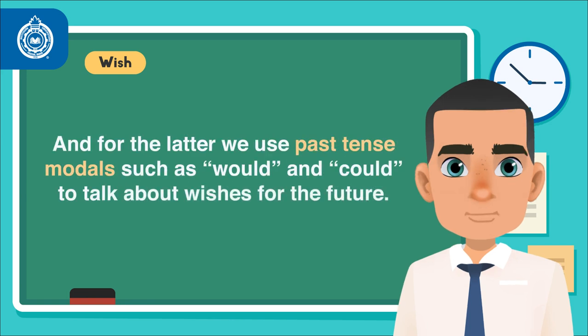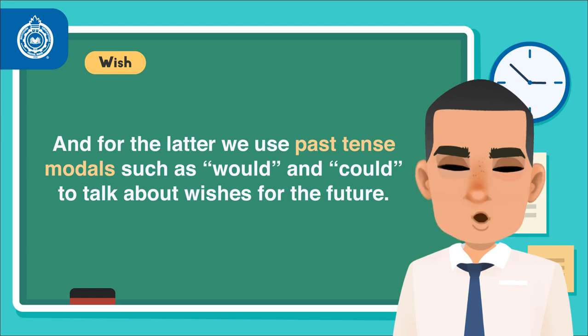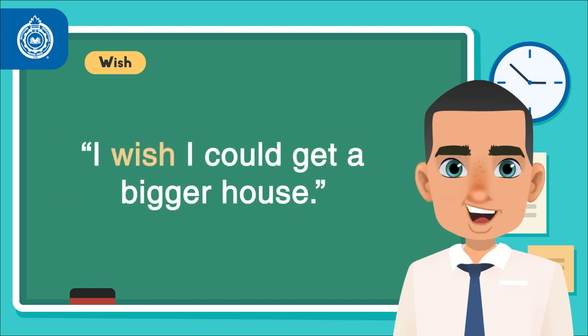And for the latter, we use past tense modals such as WOULD and COULD to talk about wishes for the future. For example, I wish I could get a bigger house.